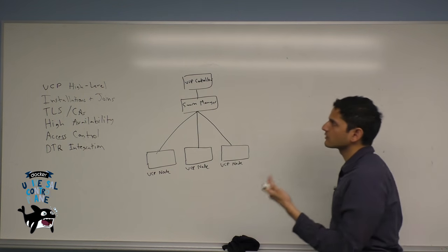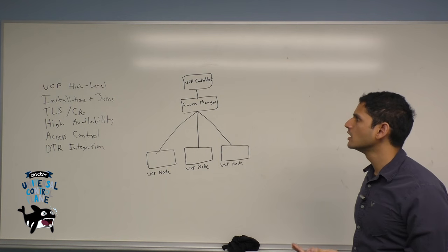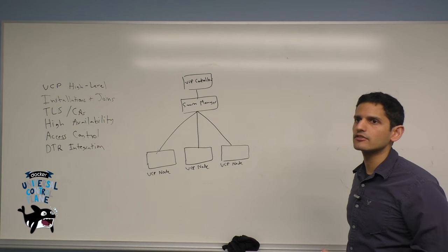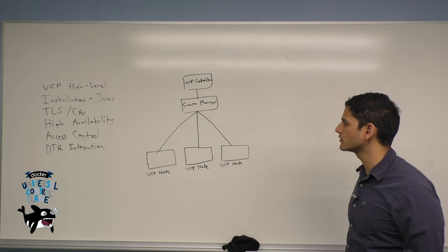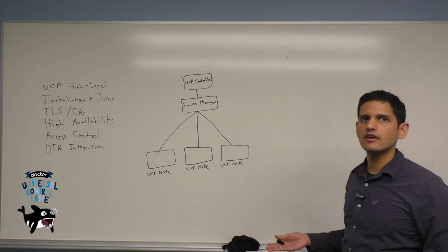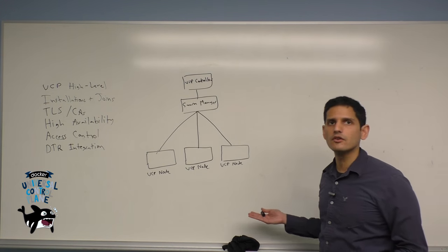When you make a scheduling request as a user, this request goes to the UCP controller, which then passes it off to the Swarm Manager once it understands your authentication credentials, and then schedules the containers from your request on one of the nodes within the cluster.